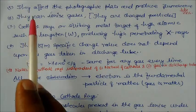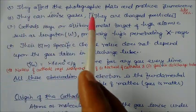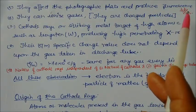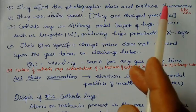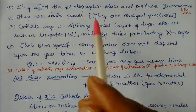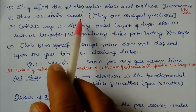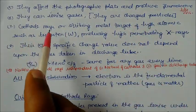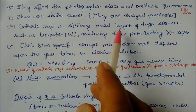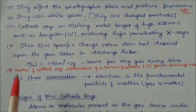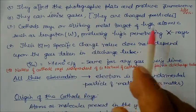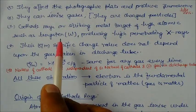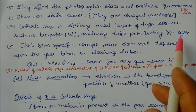This was one of the important discoveries made by Thomson. Cathode rays affect the photographic plate. They can also produce fluorescence — for example, zinc sulfide, a fluorescent substance, will glow. They can ionize gases, which also proves they are charged particles. When cathode rays strike a metal target of high atomic weight like tungsten, they produce X-rays.